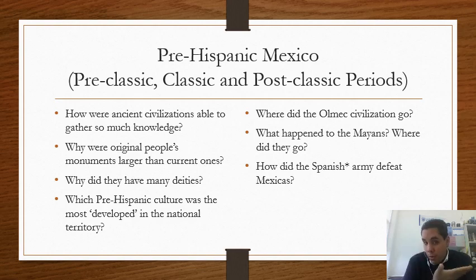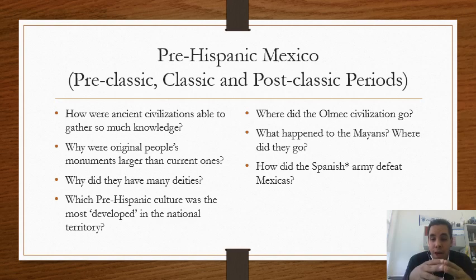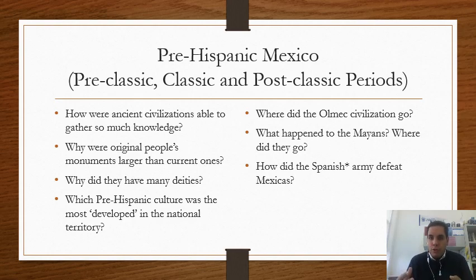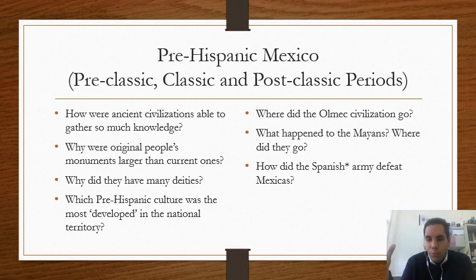More specific questions: Where did the Olmec civilization go? That would go to the pre-classic team. What happened to the Mayans — where did they go? That's a tricky question suited to the classic period. Then: how did the Spanish army defeat the Mexicas? Watch out for the framing of 'Spanish army' specifically — it's intentional so you get a chance to critically challenge the question.